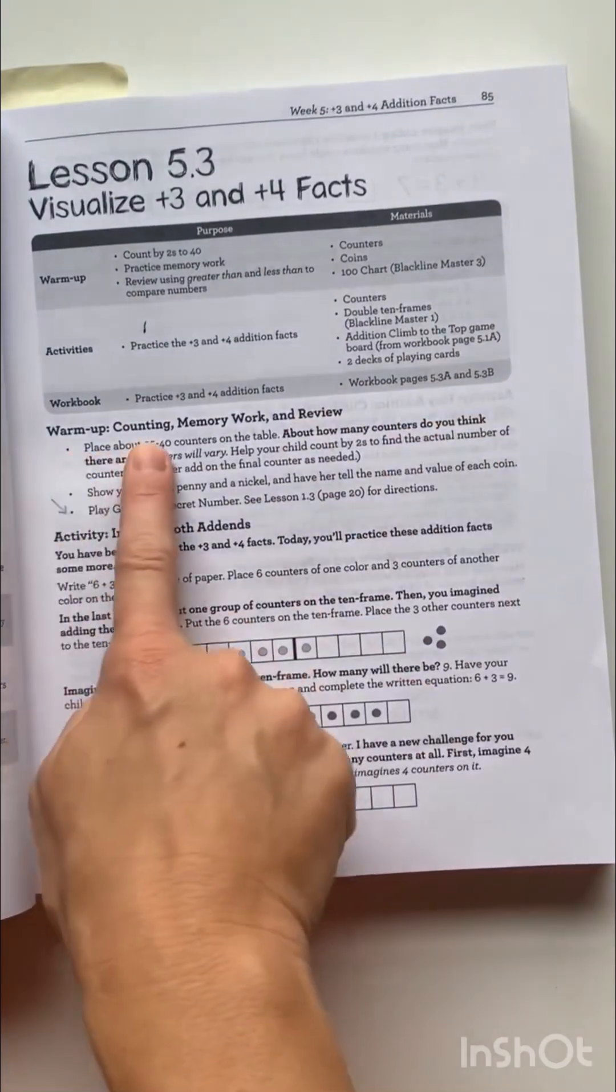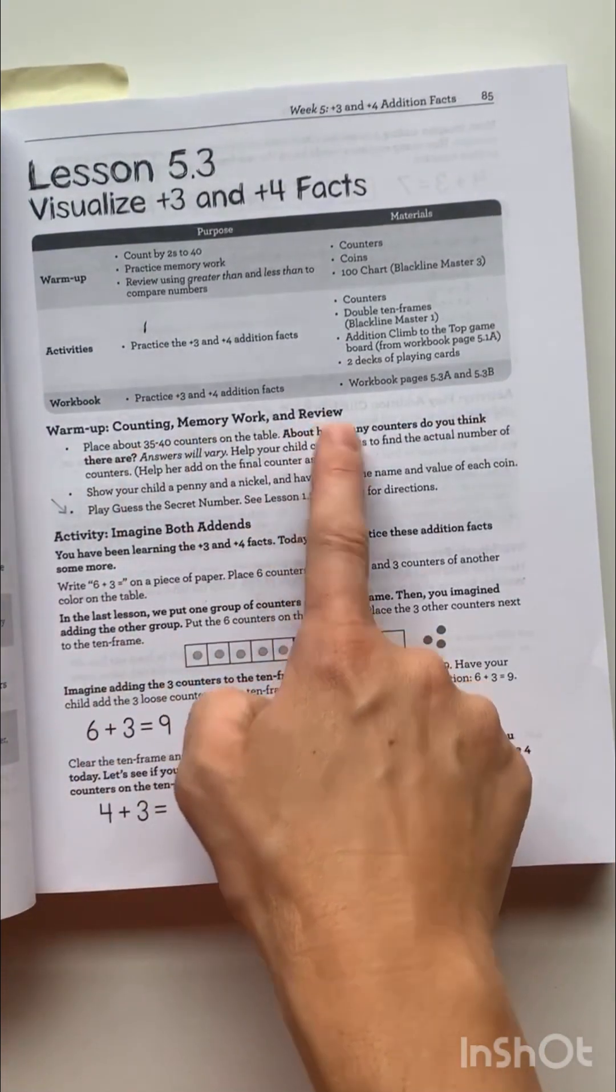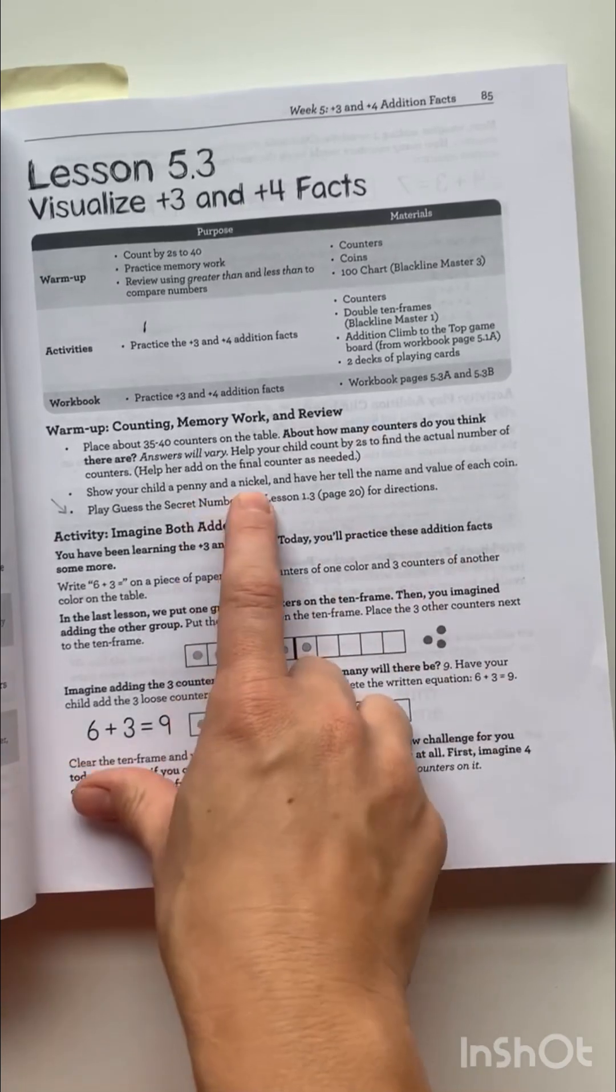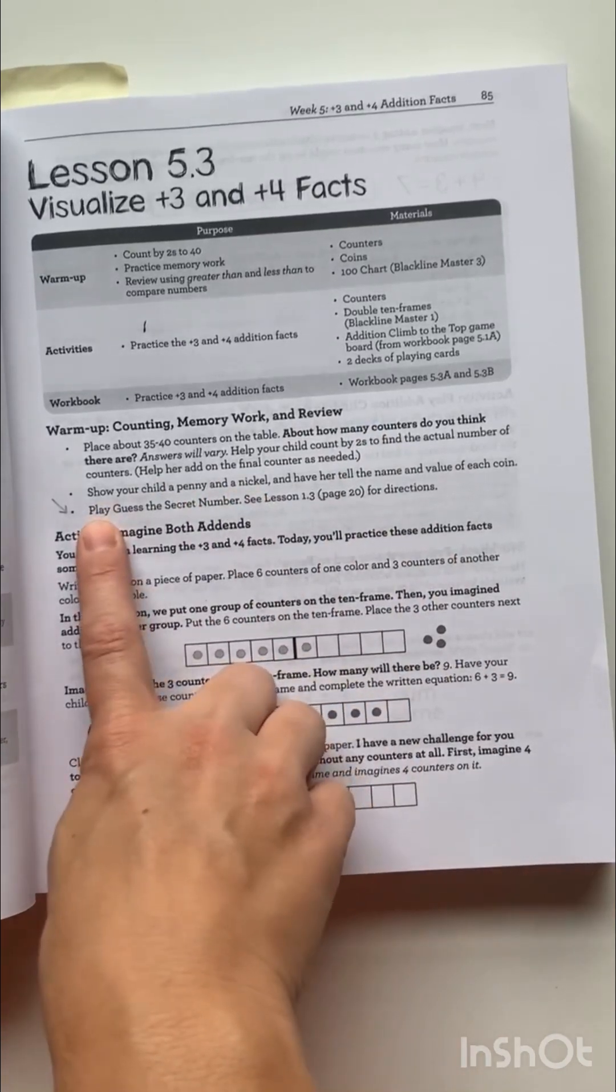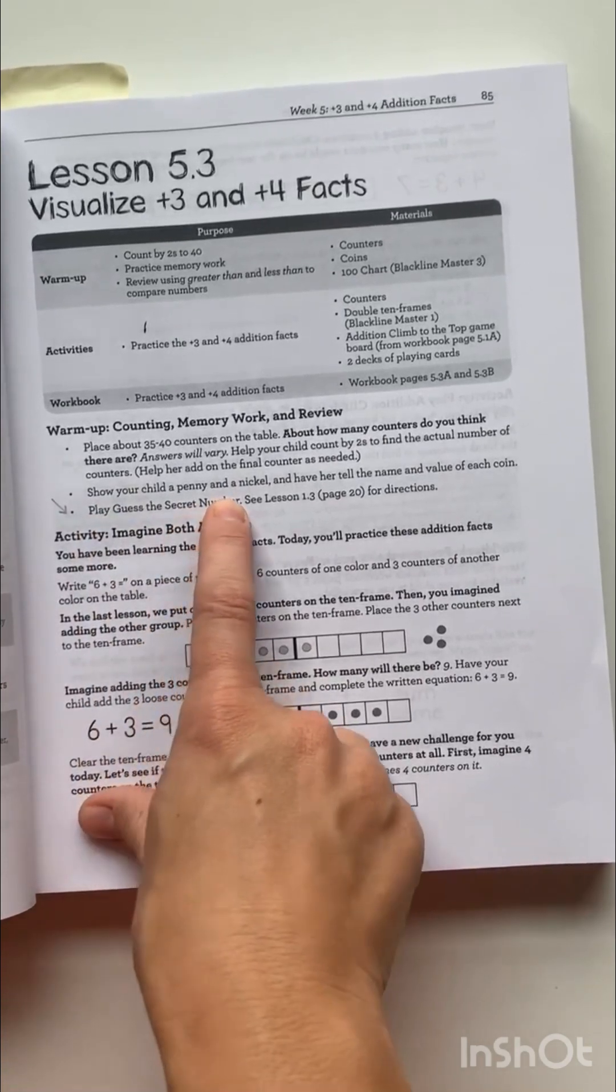Let's look at a lesson kind of further into the book. So you can see how this warmup really works. You'll see it includes counting, memory work, and review. And so for example, in this one, the memory work has to do with pennies and nickels. And then it even will say something like play guess the secret number, which is one of her games. So you'll play that before the lesson begins.